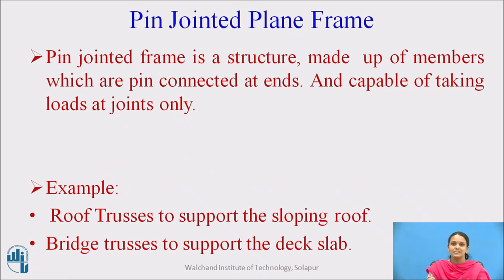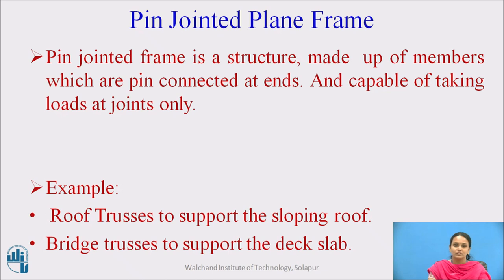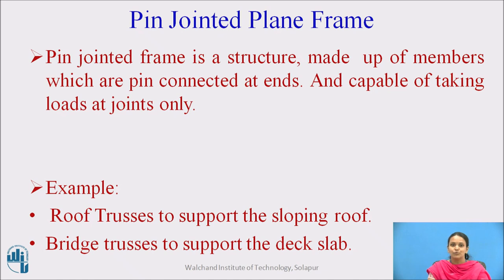A pin-jointed frame is a structure made up of members which are pin-connected at the ends, and the joints are only capable of taking external loads. Examples of pin-connected frames are roof trusses — the steel structure observed below industrial roof covering — and bridge trusses used to support the deck slab.